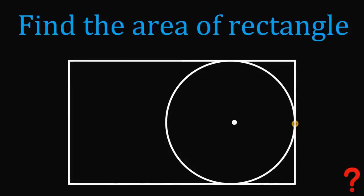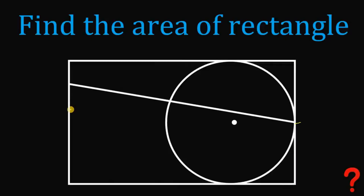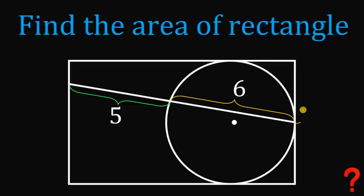From this point of tangency, let's draw a segment directly to the opposite side of this rectangle. The measure of this segment must be equal to 5 units, and the measure of this side must be equal to 6 units. Our goal in this question is to find the area of this rectangle.